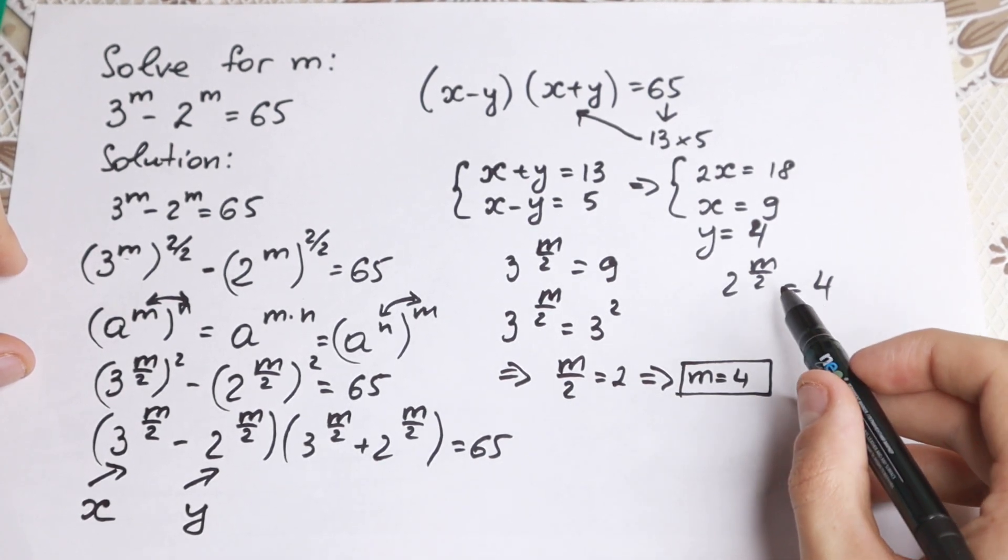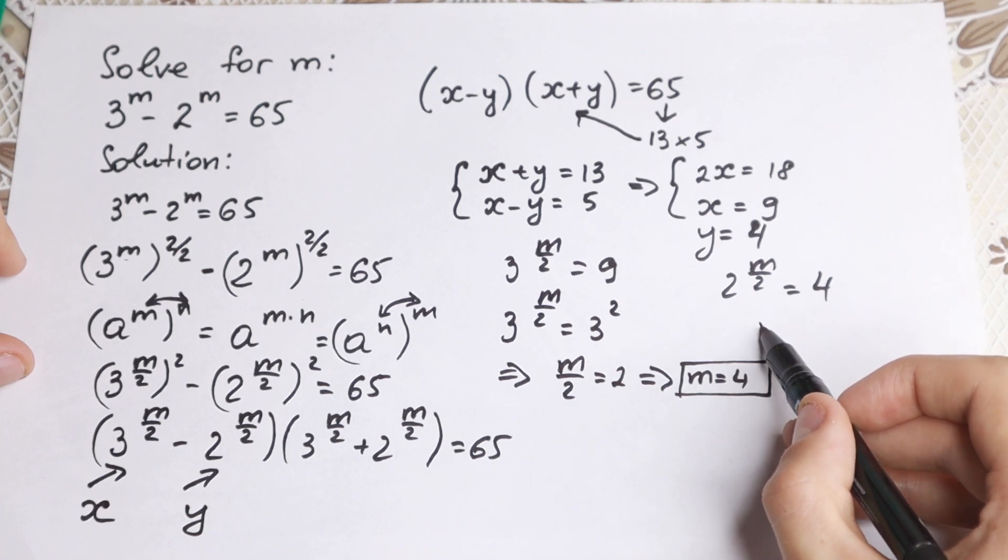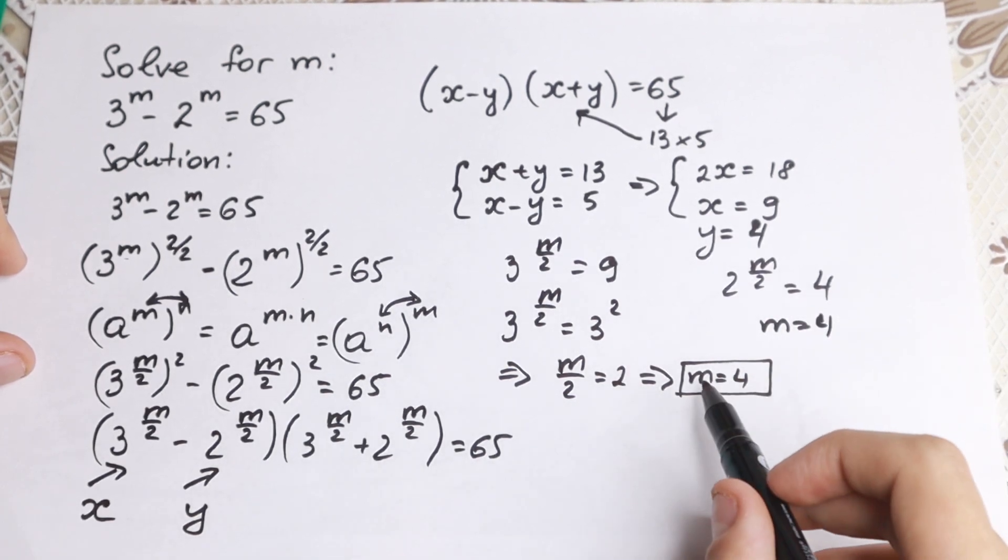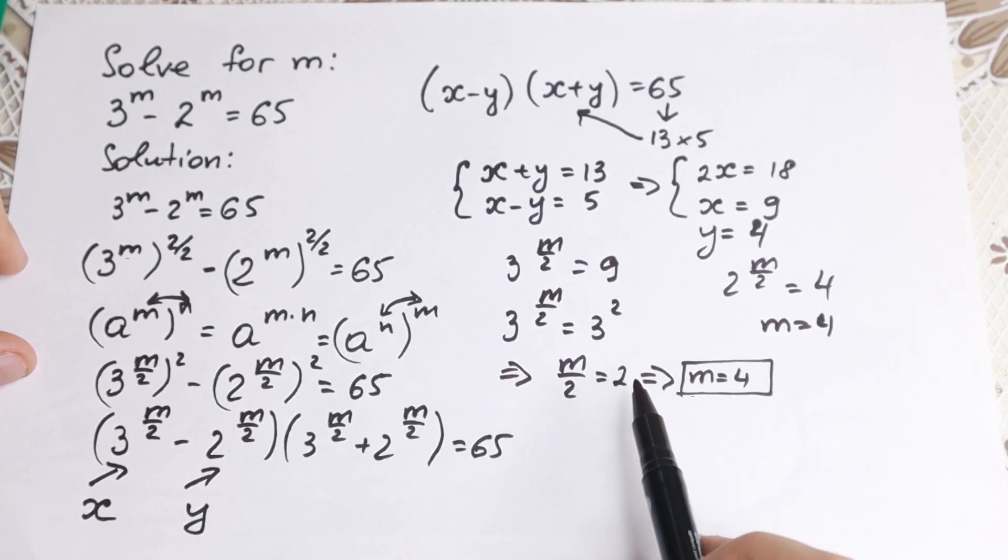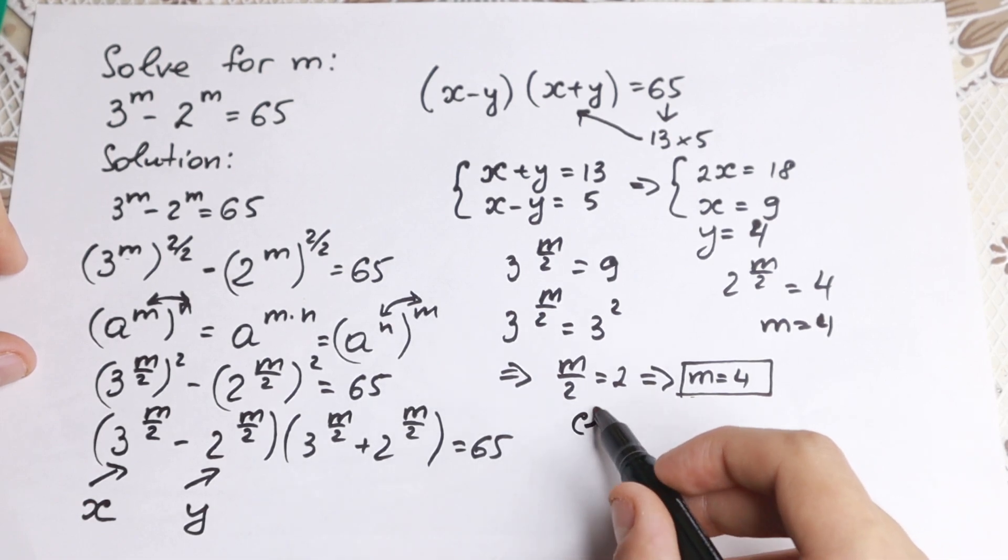This is the same, 2 to the power m over 2 equal to 2 squared. We have m over 2 equal to 2, so we'll have m equal to 4. m equal to 4 in this way and in this way. So as you can see in this way it works and it works in this way. So m equal to 4.